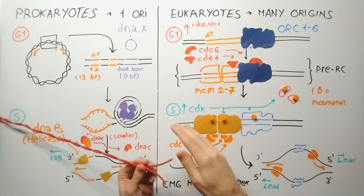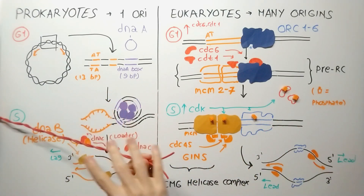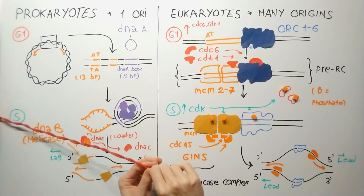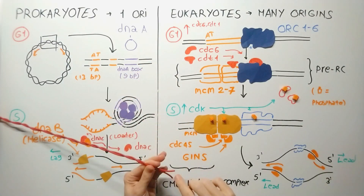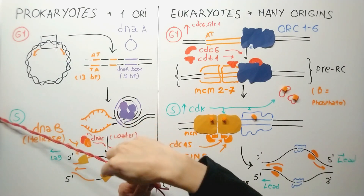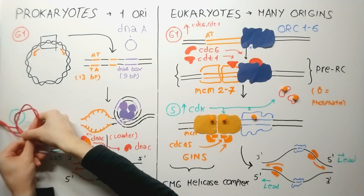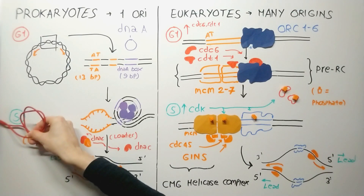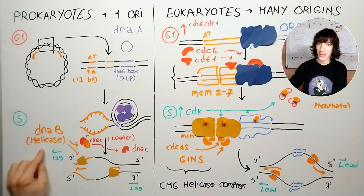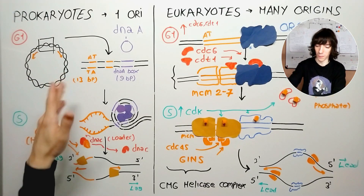But DnaA proteins don't need topoisomerases to make cuts and release the tension that way. What DnaA proteins do instead is twist not each cable individually, but the double helix itself, making a clockwise twist with the entire double helix. Check out what happens — the strands separate. And when the strands are separated, a new kind of enzyme, DnaB — the helicase — can bind to the DNA. That's what we really wanted from the beginning.